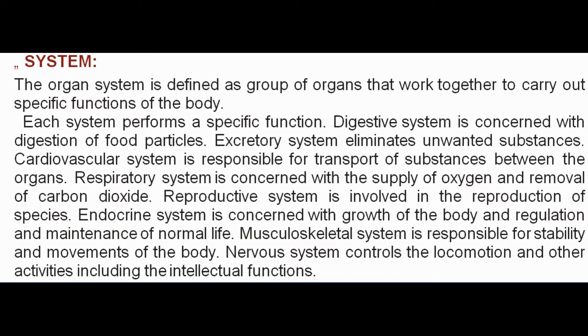The organ system is defined as a group of organs that work together to carry out specific functions of the body. Each system performs a specific function. Digestive system is concerned with digestion of food. Excretory system eliminates unwanted substances. Cardiovascular system is responsible for transport of substances between organs. Respiratory system supplies oxygen and removes carbon dioxide. Reproductive system is involved in reproduction of species. Endocrine system is concerned with growth and maintenance of normal life. Musculoskeletal system is responsible for stability and movements of the body. Nervous system controls locomotion and other activities including intellectual functions.